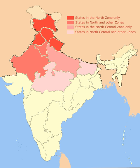Desert National Park, located in Rajasthan, features extensive sand dunes and dry salt lakes. Wildlife unique to the region includes the desert fox and the great Indian bustard. Kanha National Park — whose sal and bamboo forests, grassy meadows and ravines were the setting for Rudyard Kipling's The Jungle Book — came into being in 1955 and forms the core of the Kanha Tiger Reserve, created in 1974 under Project Tiger.